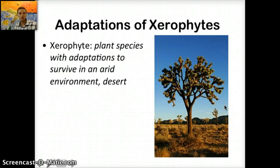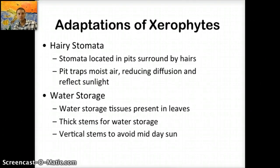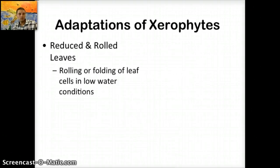Some plants live in environments where it's much more difficult to survive. Xerophytes are plant species with adaptations that help them survive in very arid or desert-like areas without much rainfall. One example is hairy stomata — stomata located in pits surrounded by hairs. The pit helps to trap moist air, reduces the rate of diffusion, and reflects sunlight, so less water evaporates quickly. They also have water storage tissue in the leaves, and thick stems provide water storage. Vertical stems help to avoid midday sun. Another adaptation is reduced and rolled leaves — the rolling or folding of leaf cells in low water conditions makes them flaccid and reduces the area in which transpiration can occur. These species typically have small leaves, thick leaves, spines, or sometimes no leaves at all.